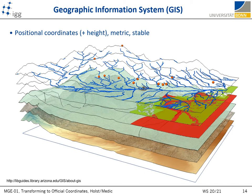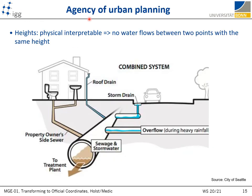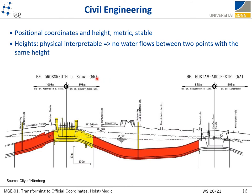A frequent use case depicted on this slide is the analysis of 3D maps to estimate terrain slopes and for hydrological modeling — modeling how water flows and watersheds. In these cases, besides the 2D position, we also need height information with respect to the Earth's surface and not to the surface of some imaginary ellipsoid. Urban planning has very similar requirements, where it is highly important that heights are physically interpretable, considering the Earth's surface for construction of sewage and drainage systems. The same goes for civil engineering projects such as the subway tunnel in the city of Nürnberg, Germany.